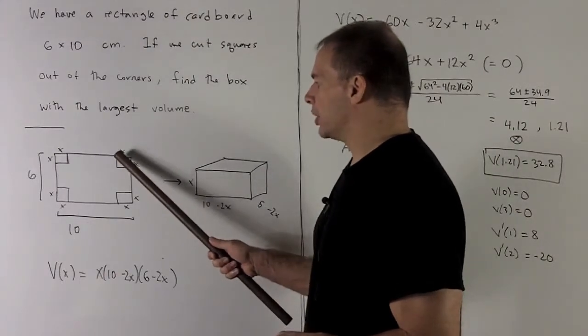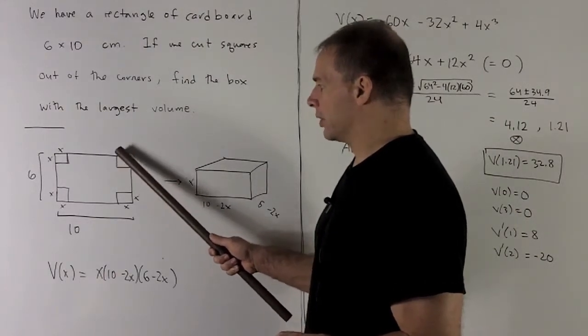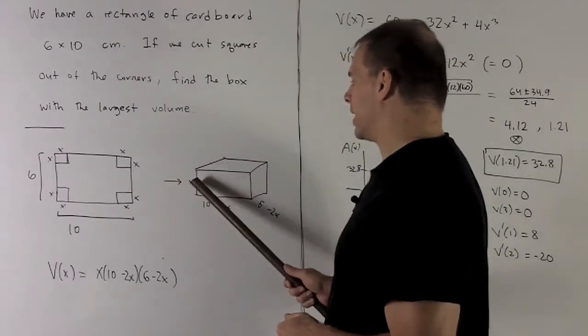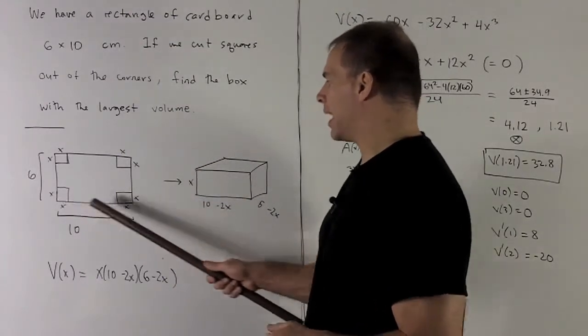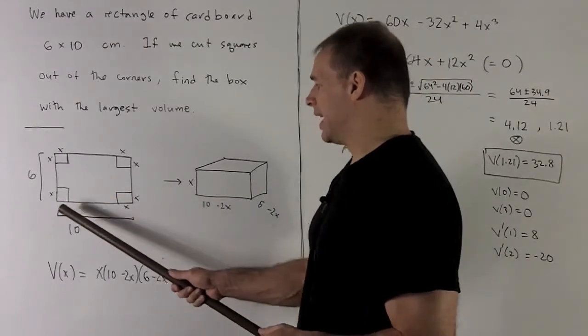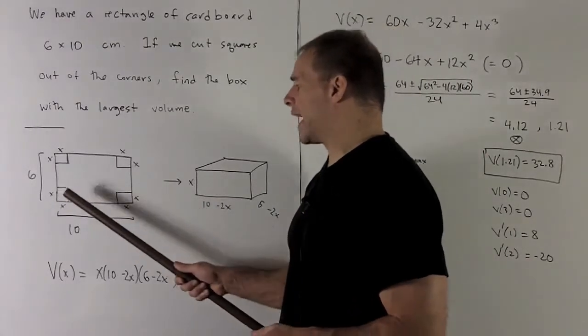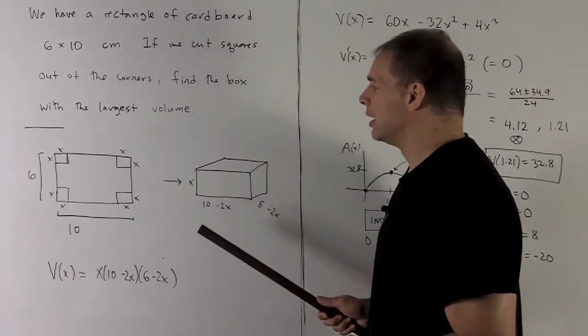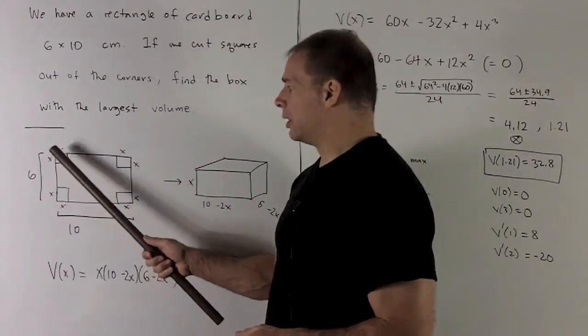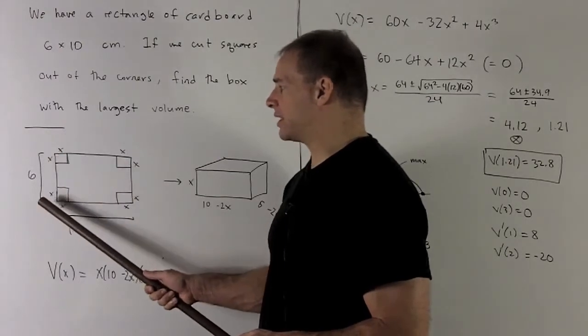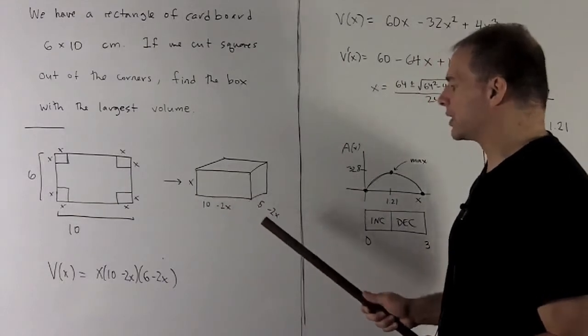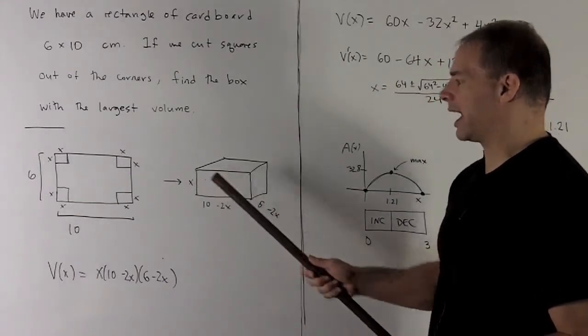The height is just going to be this little segment here that comes up, so the height is just going to be x, the dimension of the square. For this front length, that's going to be ten, but we're taking two squares out, so I'm taking out 2x, so I get ten minus 2x. And then for this side, we'll have, taking that side length of six, taking out two squares, so we're taking out 2x. So we have ten minus 2x, six minus 2x, and x.